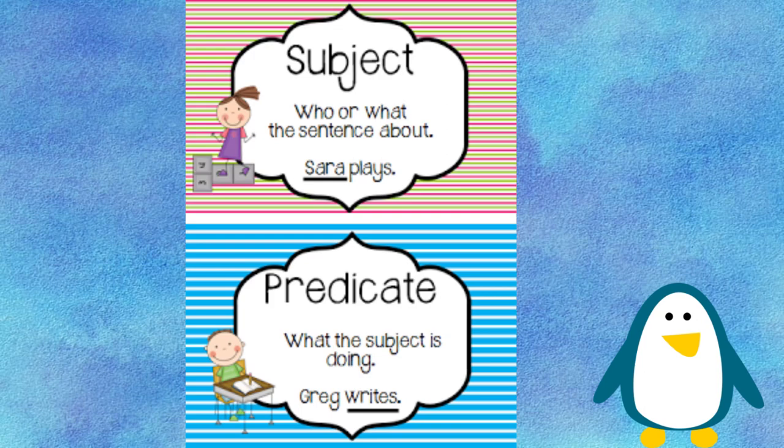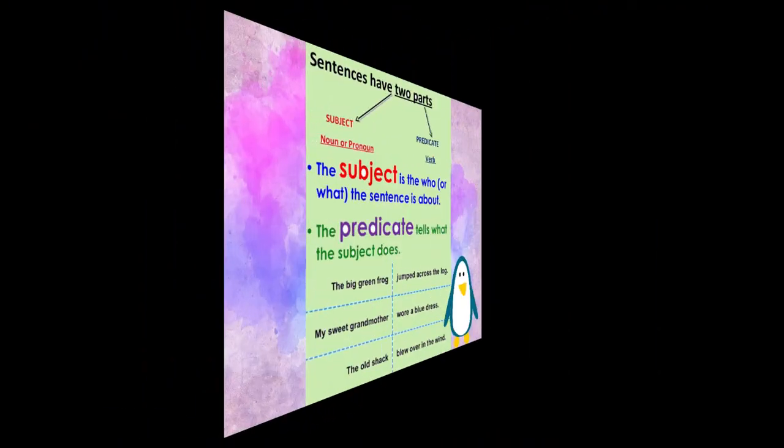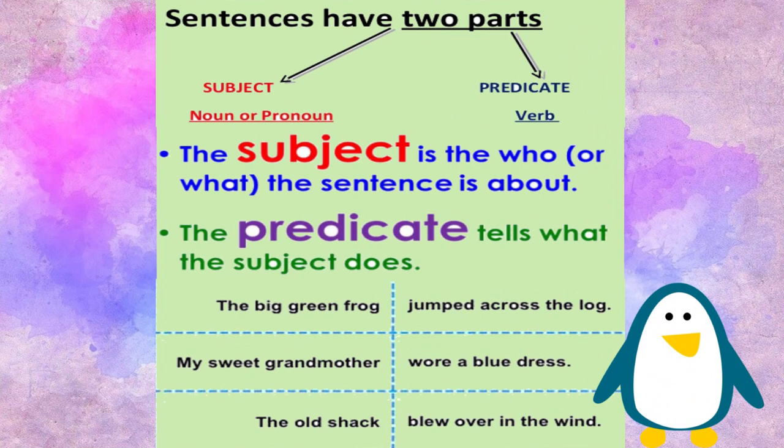Let's keep going. Sentences have two parts. The subject is the noun or pronoun, and the predicate is the verb. The subject is who or what the sentence is about. The predicate tells what the subject does.